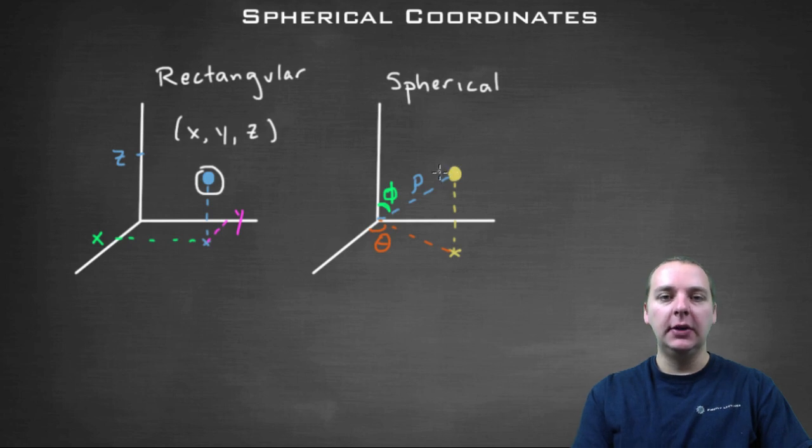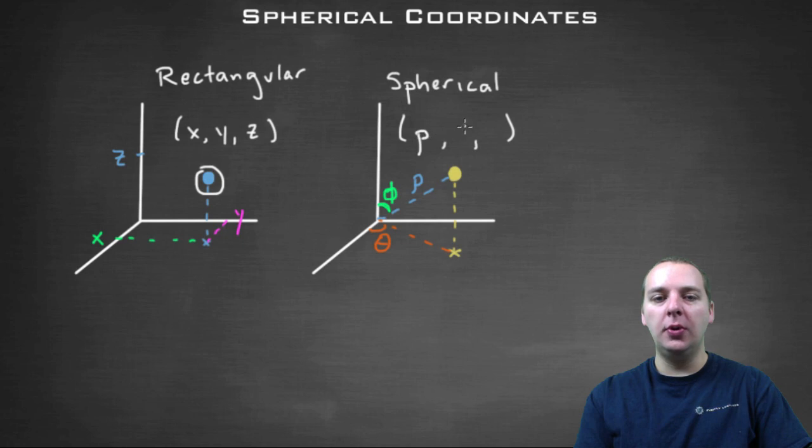So spherical form is when you have a point in space, and you're identifying it also by an ordered triple with three quantities. But the three quantities are different than x, y, and z. These are expressed as rho, theta, and phi.